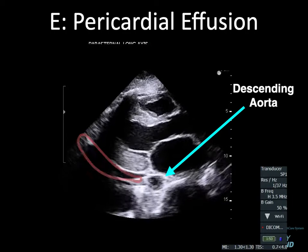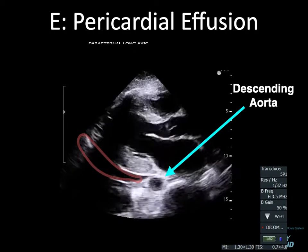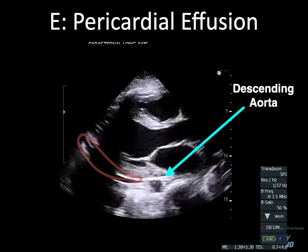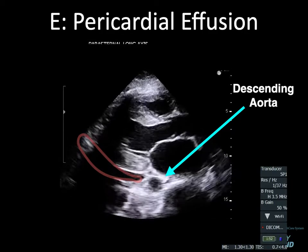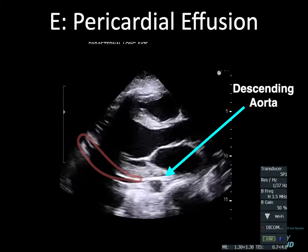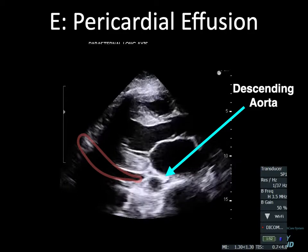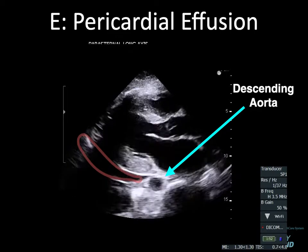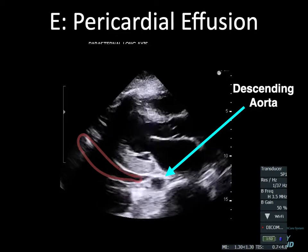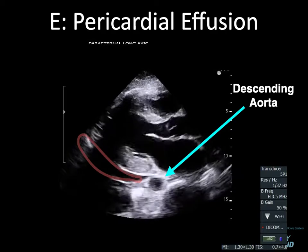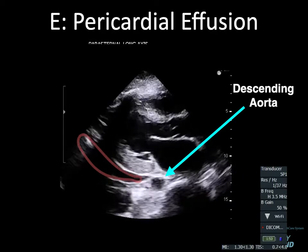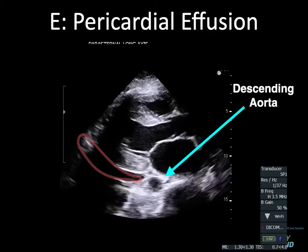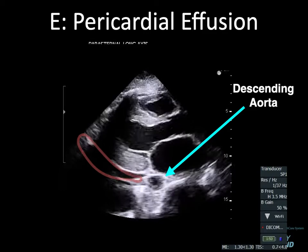The first E that we look at is the pericardial effusion — E for effusion. The key marker here is the descending aorta. This is why we want to make sure that we have plenty of depth in order to see the descending aorta and behind it. Here in our parasternal long axis, we see the bright white line of the pericardium, and we see this nice black fluid collection right there. So now we have a pericardial effusion.